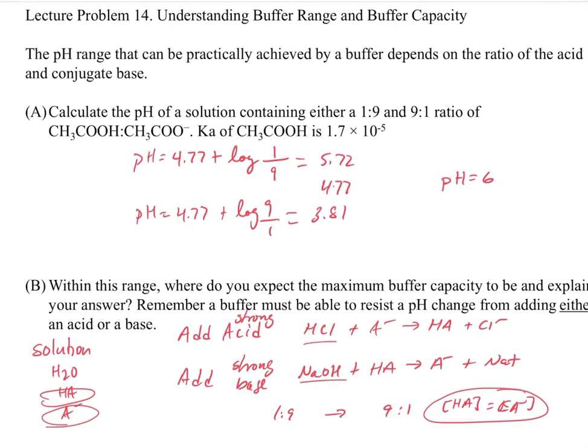the larger the concentration for HA and A minus is, the more buffer capacity you're going to have. But the reason why we select it at this location is so that we can have enough HA and A minus to react with either an acid or a base.